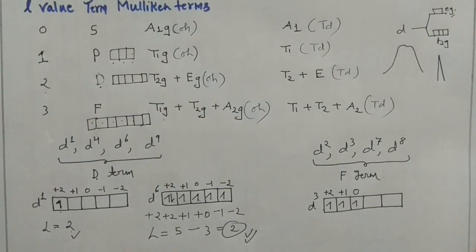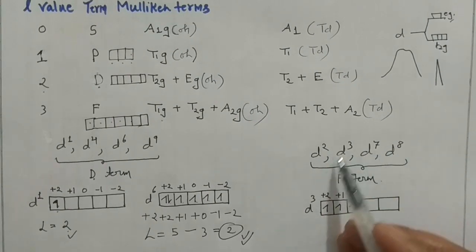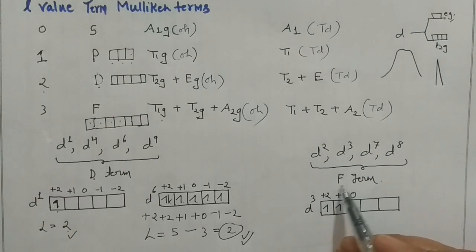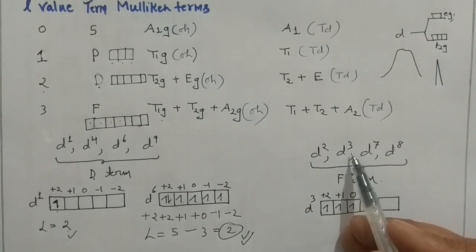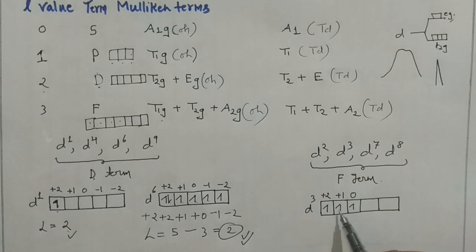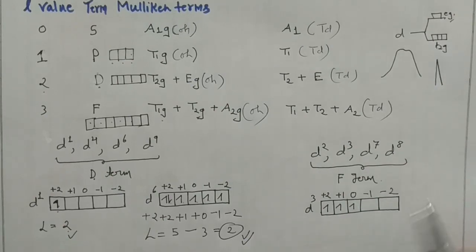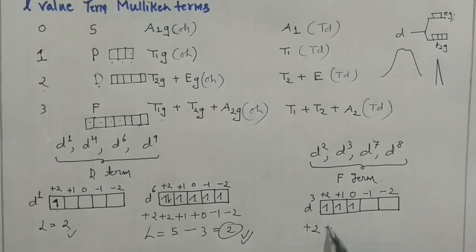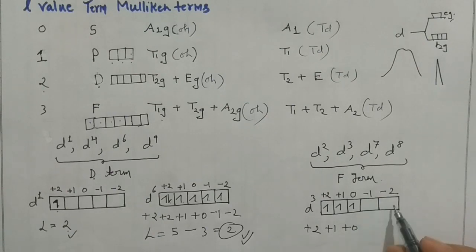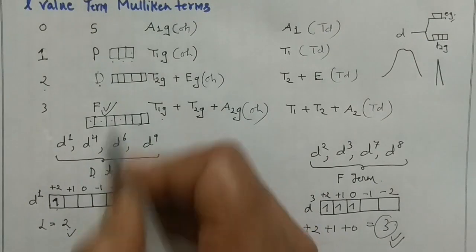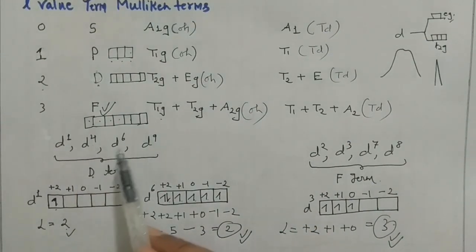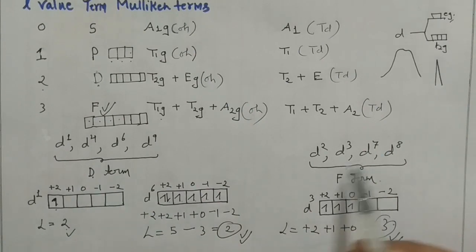So remember: for d1, d4, d6, d9 the ground state term is D, and for d2, d3, d7, d8 the ground state term is F. This is very important to note. I have also given this as the magic number sets: 1469 gives D term and 2378 gives F term. These will help you generate Orgel diagrams efficiently.